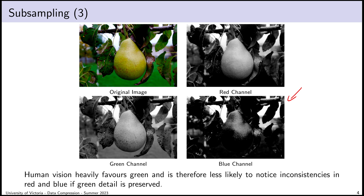Human vision heavily favors green when it comes to colors. But our eyes are also very good at distinguishing differences in luminance — differences in brightness and monochromatic detail — much more than any color. You may recall from high school biology that in your retina there are two types of cells: rods and cones. There are more rods than cones, and rods are the cells that distinguish differences in brightness, irrespective of color.